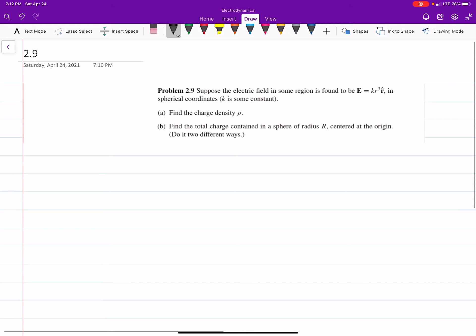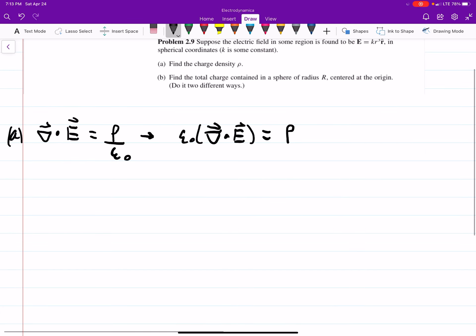Part A wants us to find the charge density. The way we do that is by using the divergence of your E field equal to your charge density rho over epsilon naught. Multiplying over by epsilon naught, we see epsilon naught times the divergence of E equals your charge density. So all we have to do is take the divergence of E.